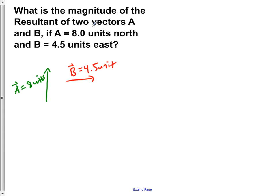We want to know the resultant of these two vectors, so we have to add the two of them together. If we add A and B, we would get this.